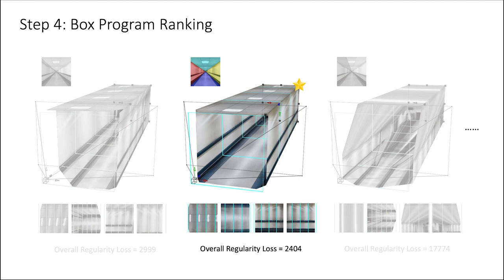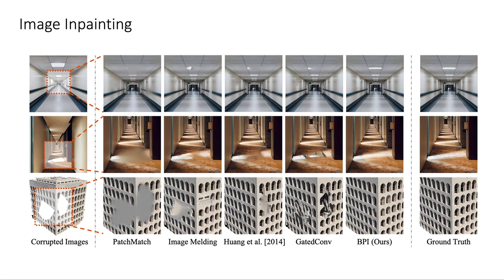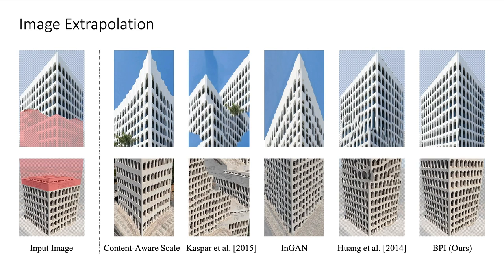Now we know how to infer a box program from a single image. Next, we will show some image manipulation and 3D scene manipulation results based on our representation. We can use this method for image inpainting. Compared with the baselines, our method preserves the structure of the scene and generates high fidelity inpainting results. Beyond inpainting missing pixels, our method can extrapolate the box structure as well. After selecting an object, we are able to infer the regularities within the object and easily make it taller.